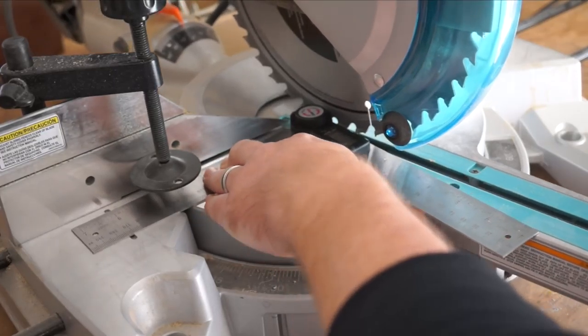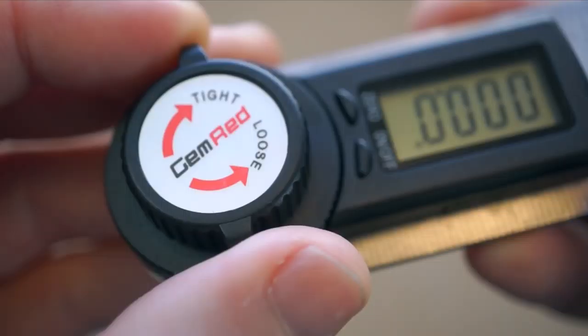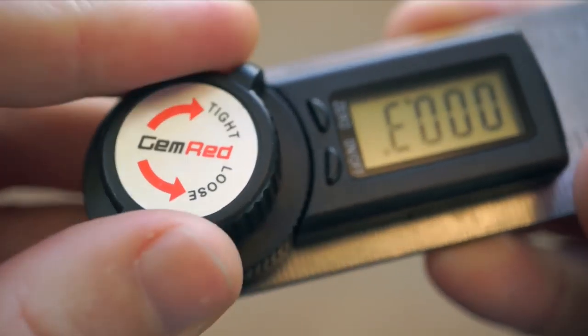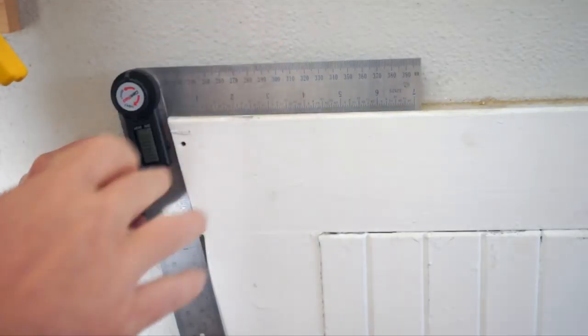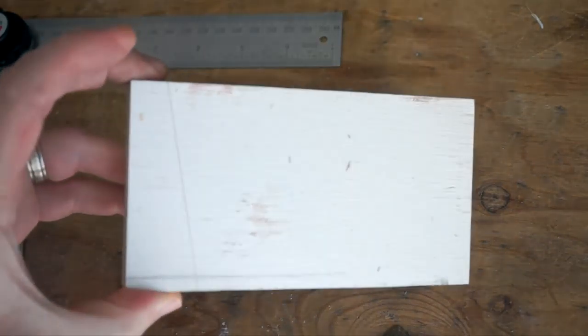If your tool's built-in angle guide isn't reliable, you can use this to verify it or calibrate it. And for me, one of the best features of this tool is that you can tighten this nut on the hinge to lock an angle in place. This way you can measure an angle, lock it in, and then transfer it right to whatever material you're using to reproduce the angle.